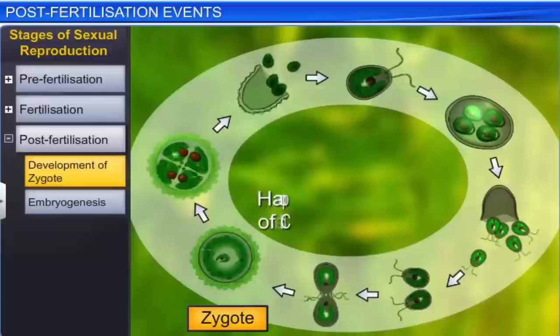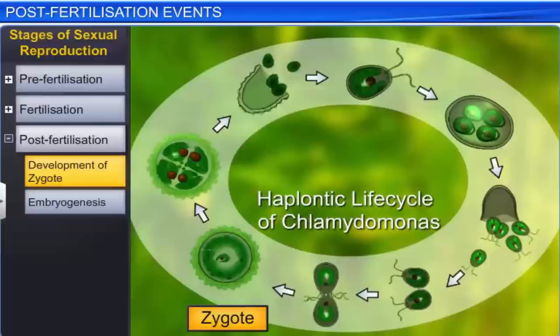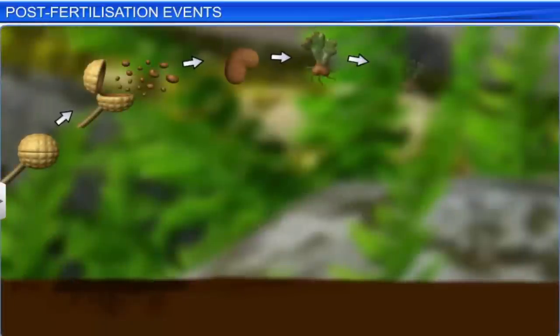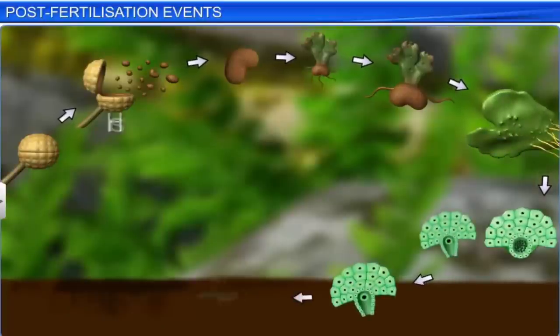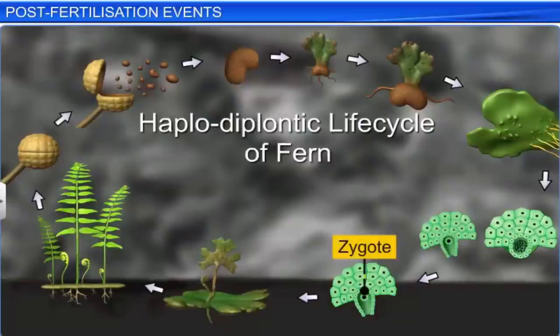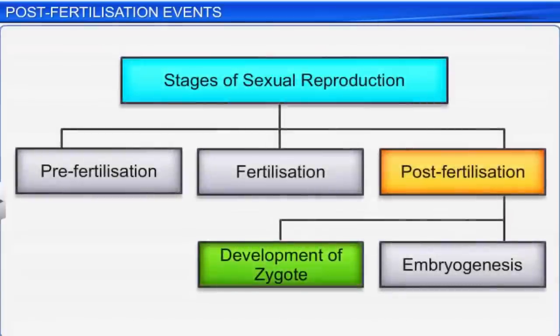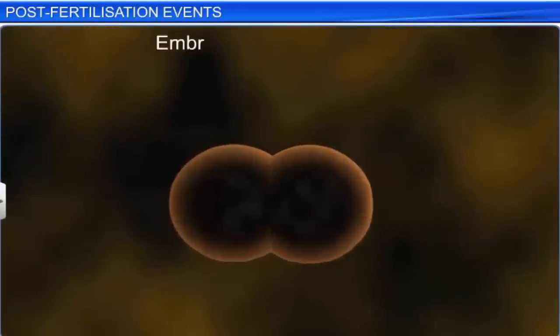An unfavorable environment forces the zygote to undergo a period of rest and start storing nutrients before germinating. The environment also influences the germination of the zygote. Apart from the environment, the development of the zygote is also influenced by the life cycle of an organism. If the organism has a haplontic life cycle, as in the case with Chlamydomonas, the zygote divides meiotically and forms haploid spores. However, in the case of a fern, a pteridophyte with a haplodiplontic life cycle, the zygote divides mitotically to form a sporophyte.